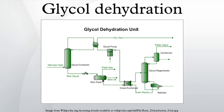Glycol absorbers can be either tray columns or packed columns. After leaving the absorber, the rich glycol is fed to a flash vessel where hydrocarbon vapors are removed and any liquid hydrocarbons are skimmed from the glycol. This step is necessary as the absorber is typically operated at high pressure and the pressure must be reduced before the regeneration step. Due to the composition of the rich glycol, a vapor phase having a high hydrocarbon content will form when the pressure is lowered.